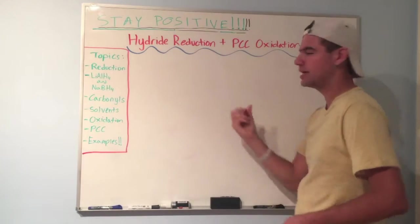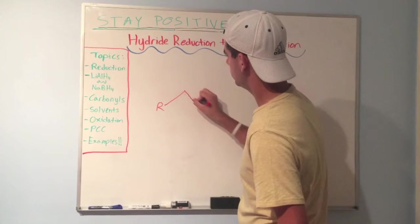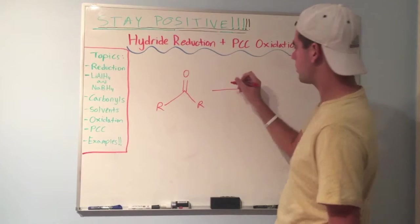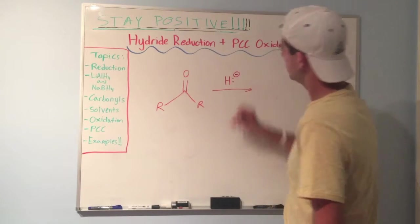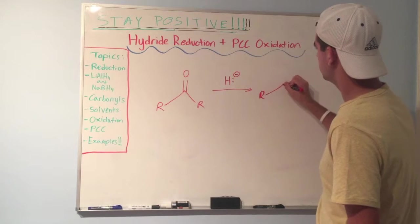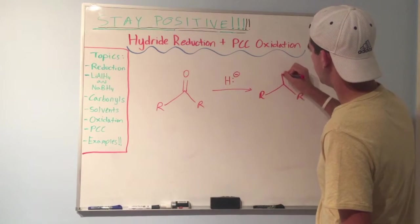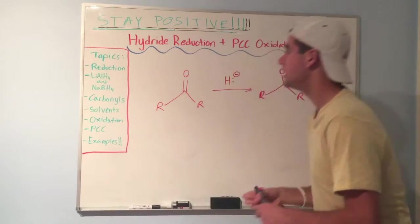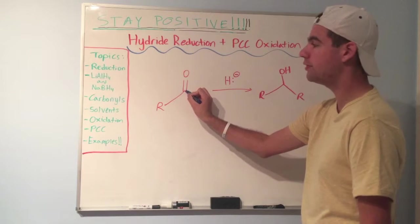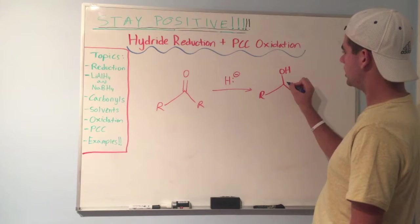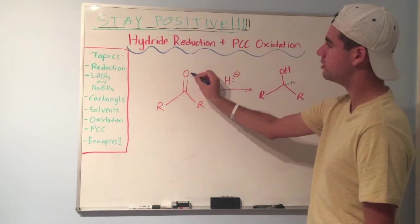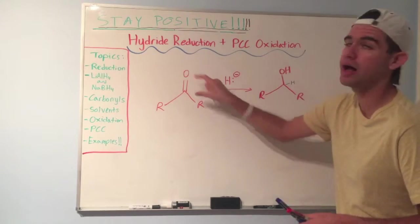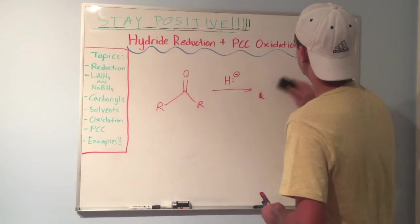So the general mechanism looks like this. You have any carbonyl in the world. We get some source of hydride, right? And we can make this an alcohol, right? OH. And notice, going back to our definition of reduction, we did add two hydrogens across a pi bond. There was no hydrogen here to begin with. There's a hidden hydrogen there now, right? And there was no hydrogen here to begin with, but there's a hydrogen there now. So we really did add two hydrogens across a pi bond.